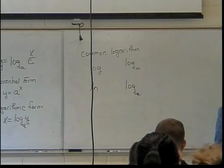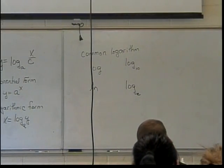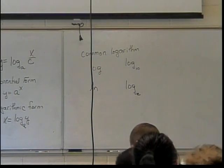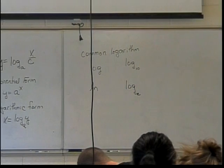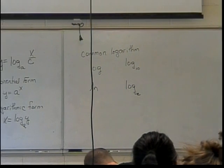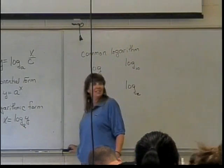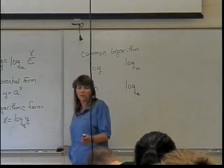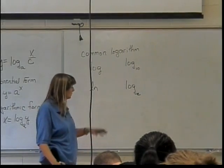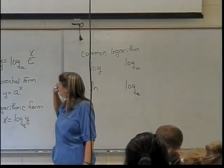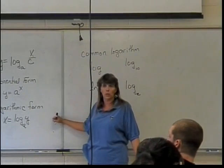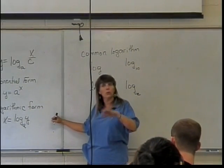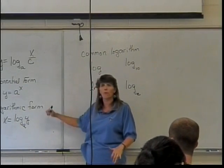A lot of people ask why it's not N-L for natural log — it's because the French got to it first. It's log naturel, that's why it's L-N. If those French people had kept their hands off math... or somebody else probably would have come up with it. Anyway, we're going to start with one of the big things we need to be able to do in order to solve exponential and logarithmic equations: go from one form to the other.